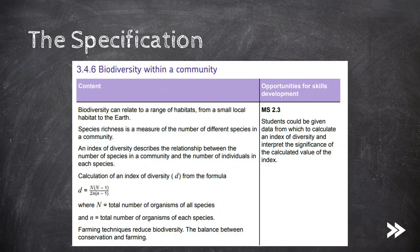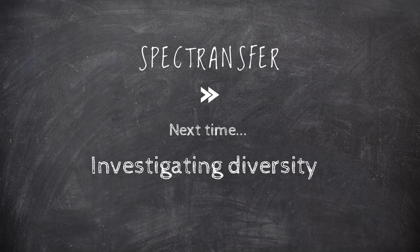That would be our topic covered. We've covered biodiversity and species richness, as well as the index of diversity. Finally, we've covered how farming techniques reduce biodiversity, and how a balance should and can be kept between conservation and farming. Thanks guys for watching. Please subscribe, comment, add any ideas or suggestions. Next time, we'll be looking at investigating diversity.